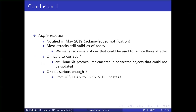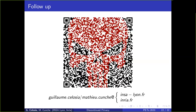We notified Apple of these privacy vulnerabilities in May 2019, and they acknowledged the notification. However, we renewed the experiments and as of today, most attacks are still valid, even after our recommendations. We ask: are they too difficult to correct — particularly HomeKit implementations in connected objects that may not be updateable? Or does Apple consider these privacy leaks not serious? From iOS 11.4 to iOS 13.5 there have been more than 10 updates, and none of the privacy leaks disclosed here have been addressed. Thank you for your attention; I will be happy to answer your questions.